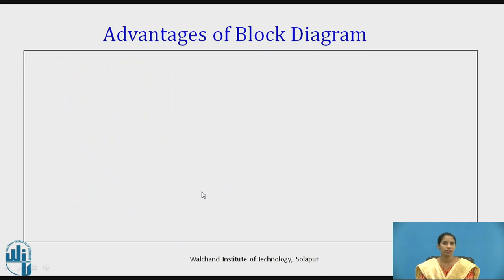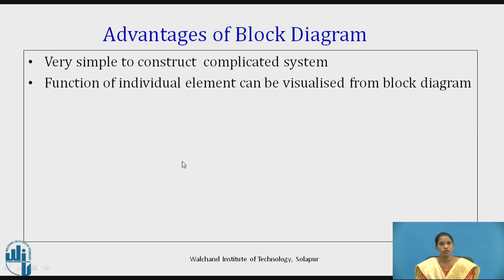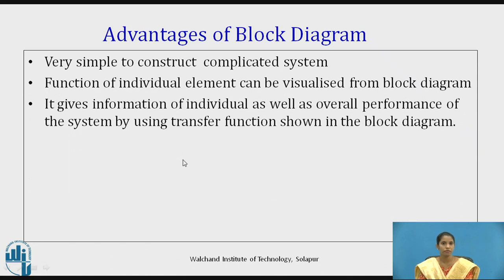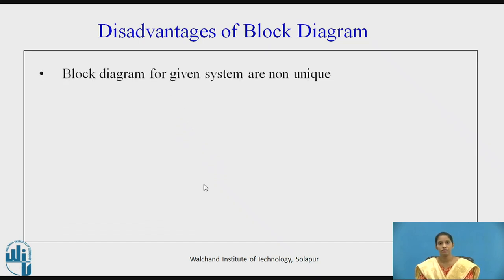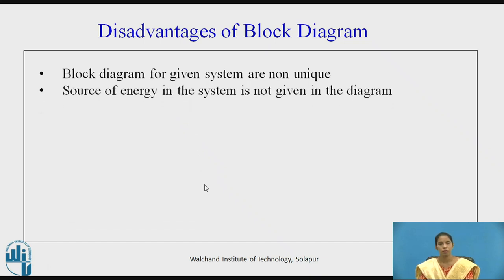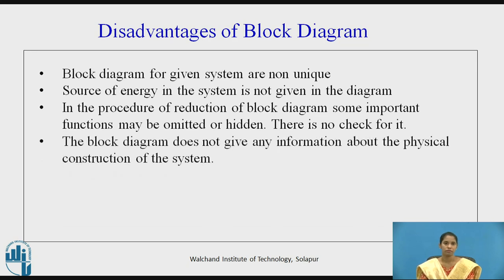Advantages of block diagrams: they are very simple to use for constructing complicated systems; the function of individual elements can be visualized; and they give information about individual as well as overall system performance using the transfer function shown in the block. Disadvantages: block diagrams for a given system are non-unique; the source of energy is not shown; during block diagram reduction, some important functions may be omitted or hidden with no check; and the block diagram does not give any information about the physical construction.